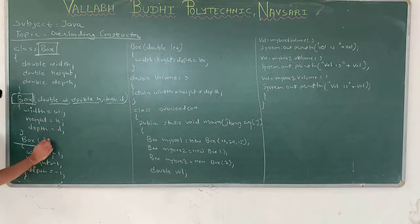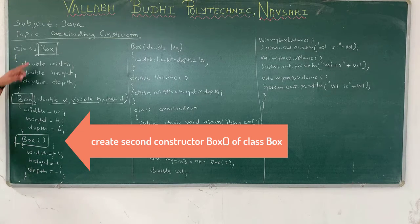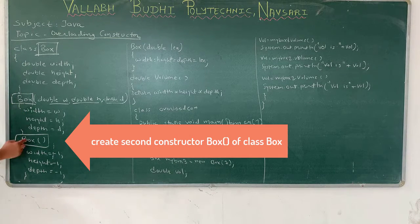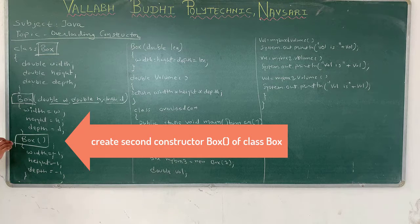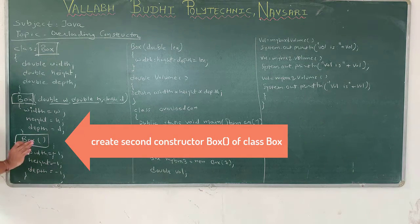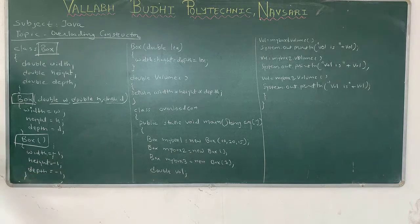Now we take another constructor with the same class name, Box. This is a second constructor with no parameters. It simply sets the value of width to -1, height to -1, and depth to -1.